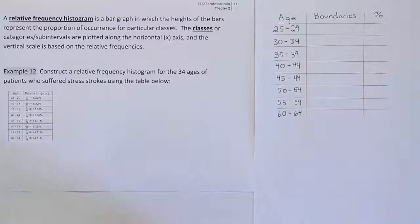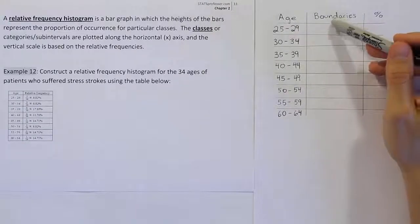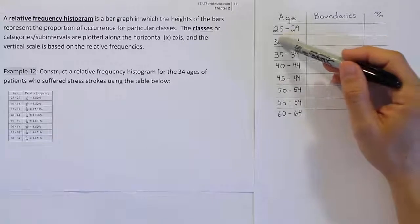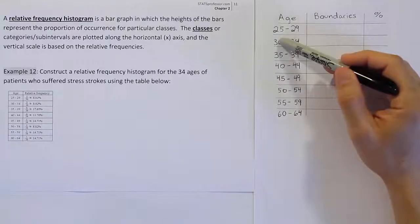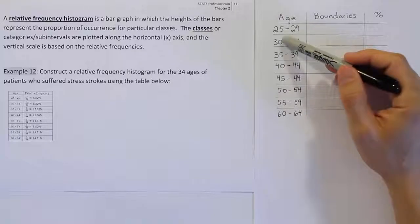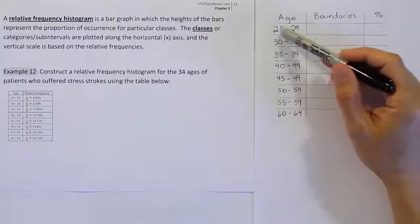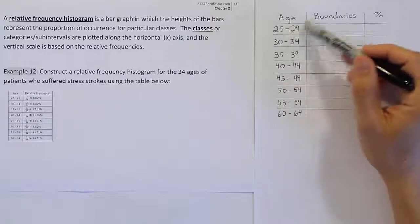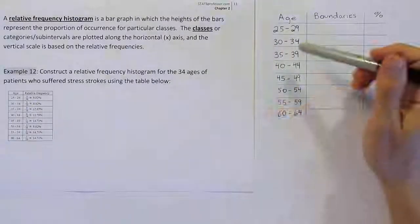The only thing we have to do before we start drawing is to create boundaries, class boundaries, instead of these class limits. The boundaries are necessary any time you have limits that have spaces between them. We go from 25 to 29, and the next category starts at 30. That's not okay for our histogram because we don't want to have a gap between the bars. So we need to have this category extend all the way up until it touches this category.